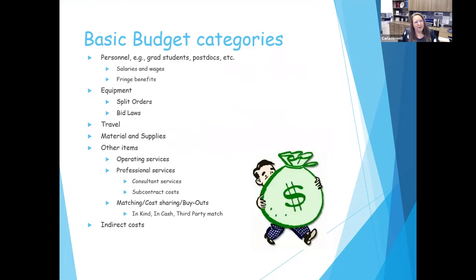We'll jump right off into this. We are here to discuss the grant budget, and we're going to go through today the budget categories. You're welcome at any time to put in the chat or the Q&A if you have comments, thoughts, or a particular question you want us to address. Each budget you have to prepare with the proposal, for the most part, they all follow the same categories of expenditures. I'm going to start out with the personnel budget — that's usually a big one.